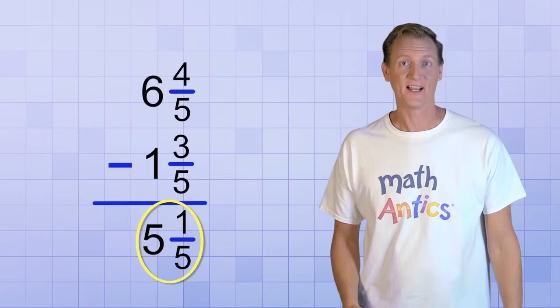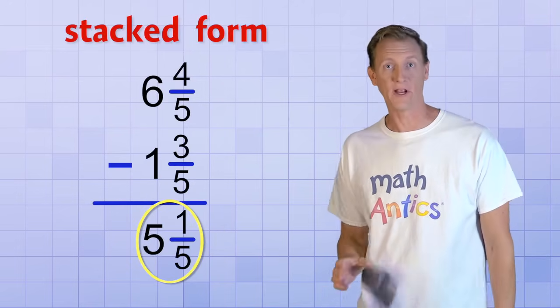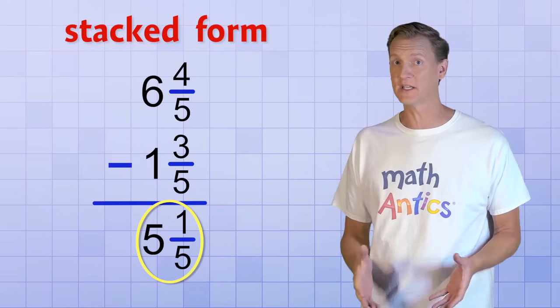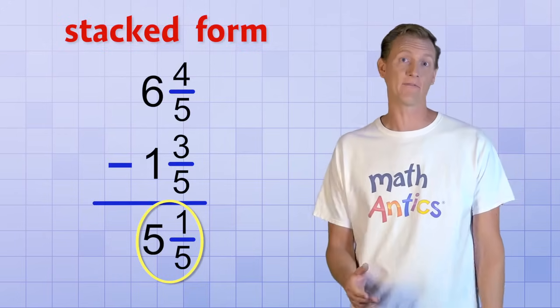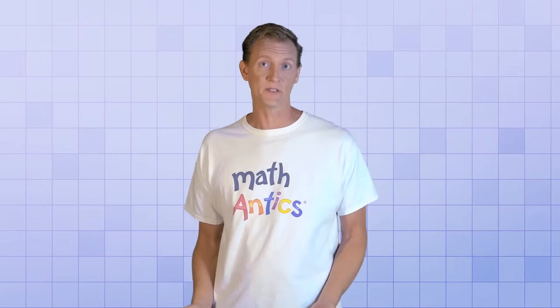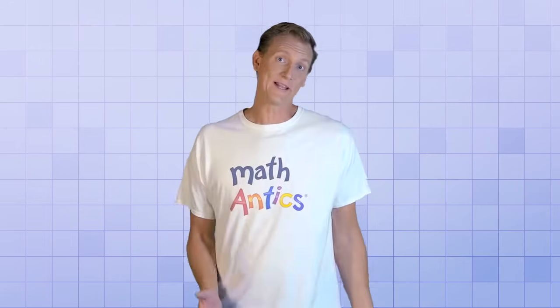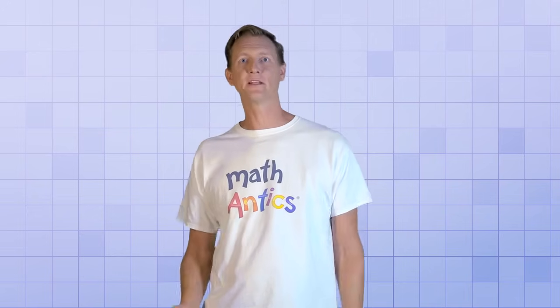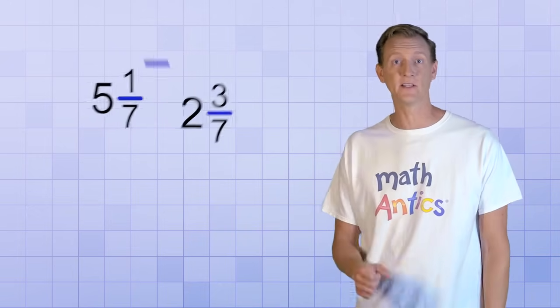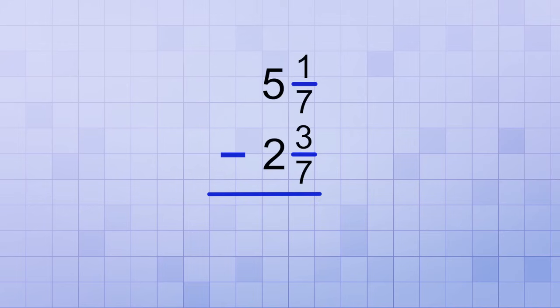See? That really was easy! And that's why I recommend using stacked form whenever you can for subtracting mixed numbers. It'll help you remember that both parts of a mixed number are being subtracted without having to worry about groups or parentheses. But even though the stacked form is a great way to keep from getting confused about groups, it doesn't make every problem quite that simple. For example, let's try the problem 5 and 1 seventh minus 2 and 3 sevenths and let's use stacked form again. We're starting out with 5 and 1 seventh so it goes on top and 2 and 3 seventh goes on the bottom.